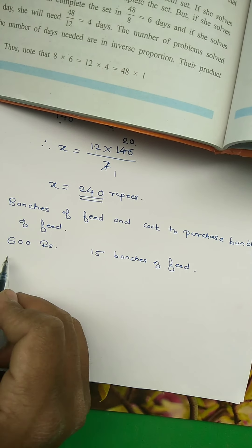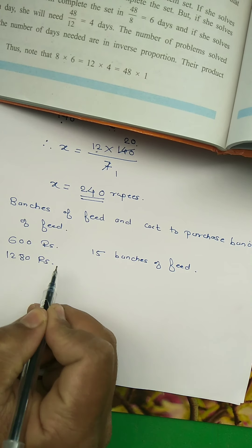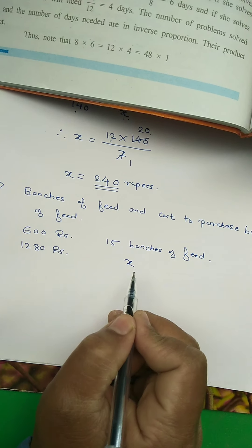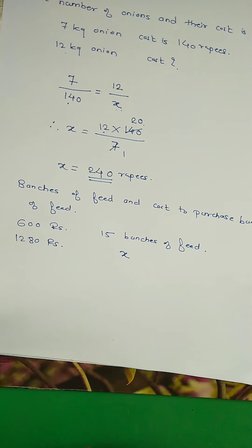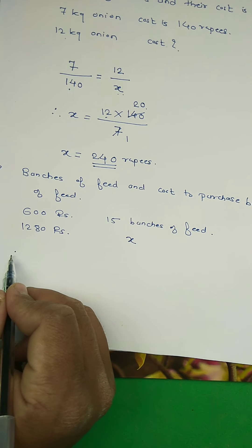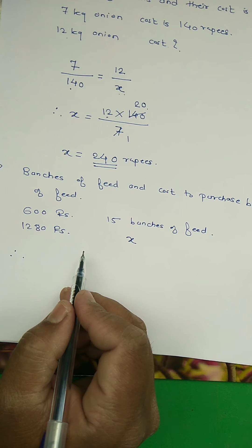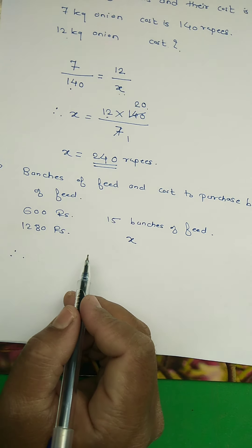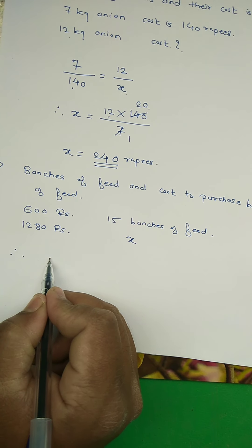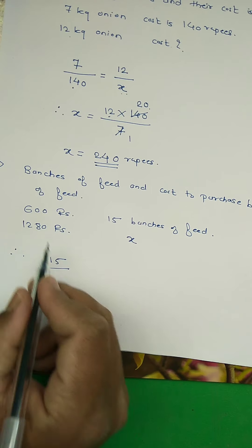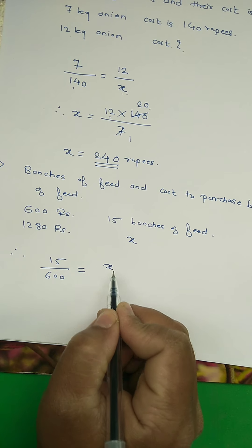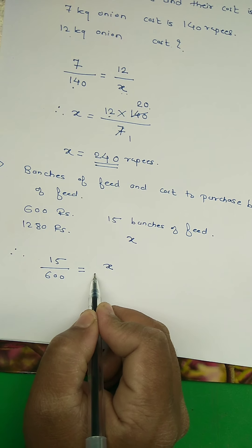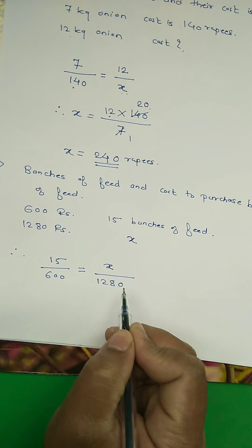Now the amount is 1280 rupees, and we consider x as the number of bunches of feed we will get for 1280 rupees. Again, these are in direct proportion. So we write: bunches divided by cost — that is 15 divided by 600 equals x divided by 1280.